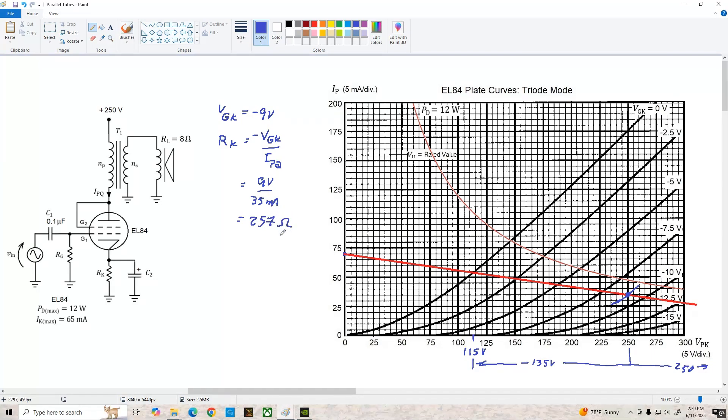What we'll do next is determine the required reflected load resistance r prime l and that's the reciprocal of the slope of the ac load line. Because we've got a centered q point we can find the slope or its inverse very easily by using r prime l equals vpk q divided by ipq so that's 250 volts divided by 35 milliamps and that gives us about 7.1 k but let's just round that off to about 7 k ohms.